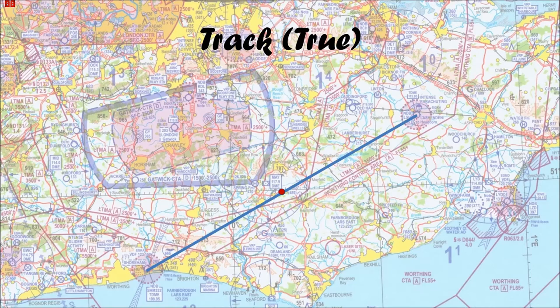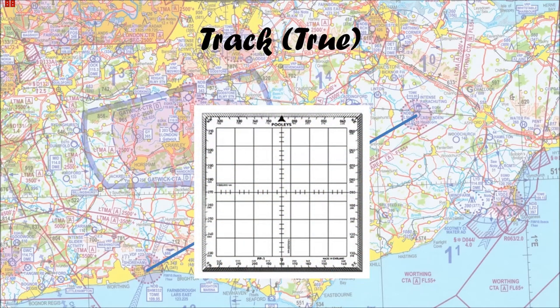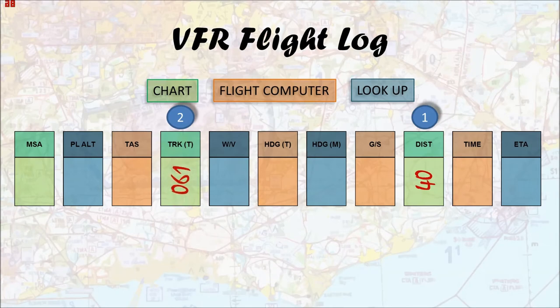The other chart type you can get is a transverse Mercator projection. On that, a straight line is a rhumb line — a line of constant bearing that crosses every line of longitude at the same angle. So you don't need to worry about where you measure from; start or finish makes no difference. Worth noting though that the rhumb line isn't the shortest distance between two points. We put our protractor at the central midpoint and can see the true track pops out at about 061 degrees, which we record in our table.